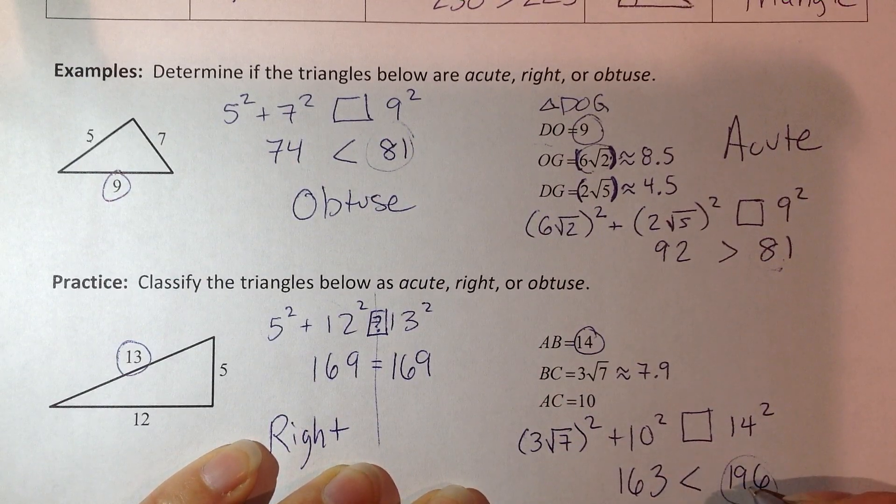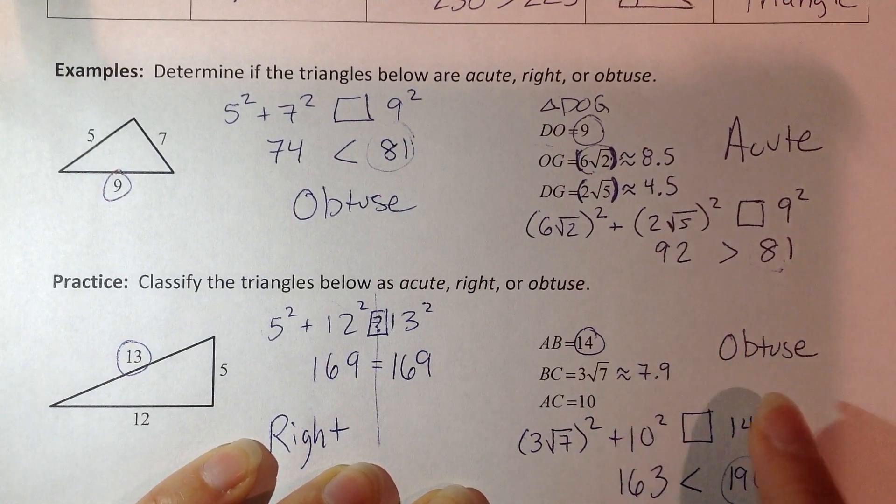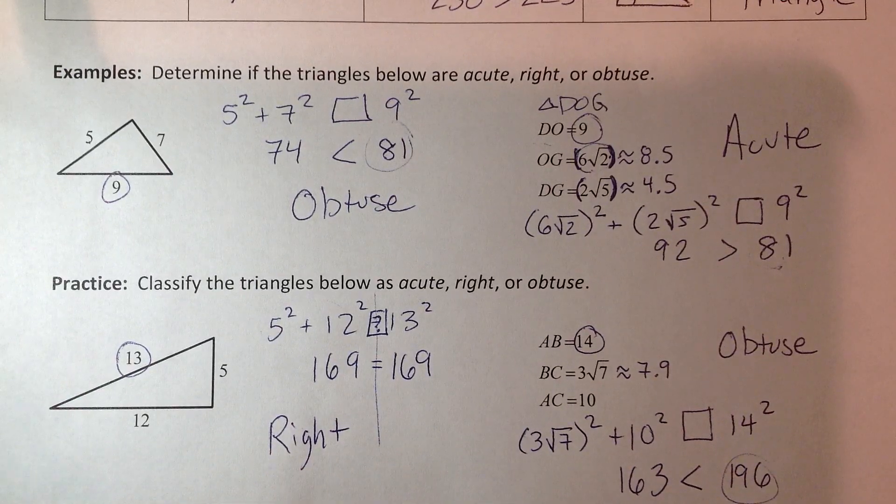C got bigger. Ticks to that side. We make that right angle bigger. So this ends up being obtuse. All right, great. Go try some practice.